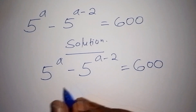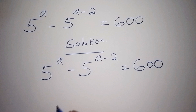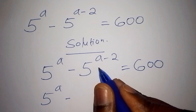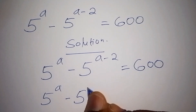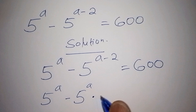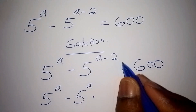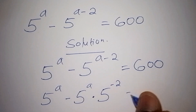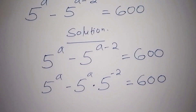The first thing we need to do is: 5 to the power of a is 5^a, then minus — so here we shall have 5 to the power of a, multiplied by 5 to the power of minus 2. We shall have 5 to the power of minus 2, and that equals 600. That's the first step.